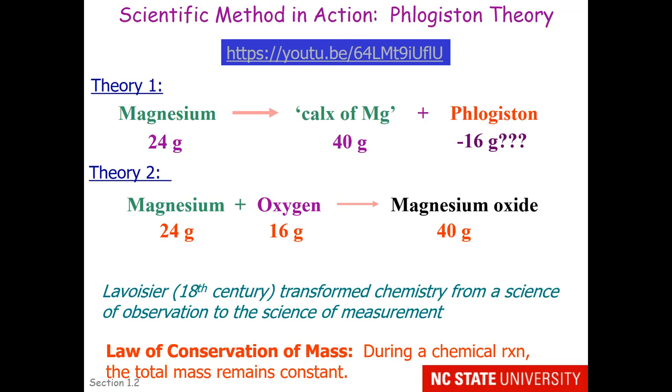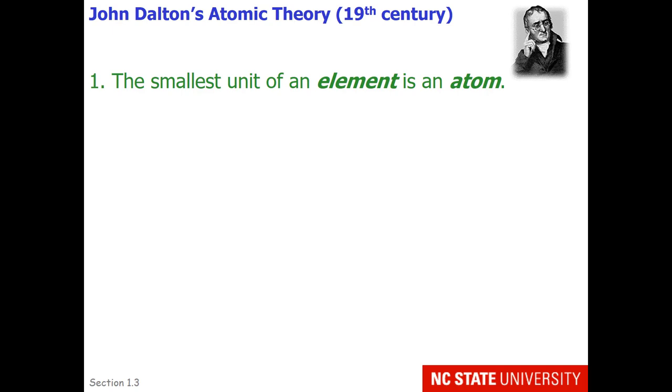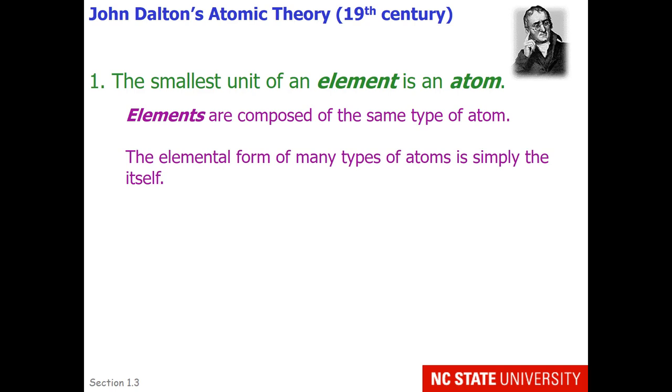Lavoisier was the founder of the law of conservation of mass, which says during a chemical reaction, the total mass remains constant. That law was a very simple distillation of observations. A theory tends to be more complex and involves several laws and explanations. Here's an example of a theory we use today: John Dalton's atomic theory. His first proposal was the smallest unit of an element is an atom.